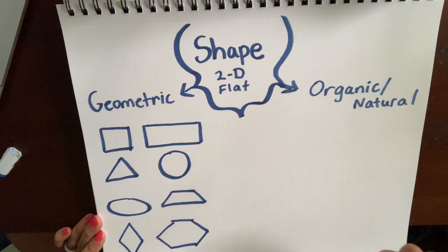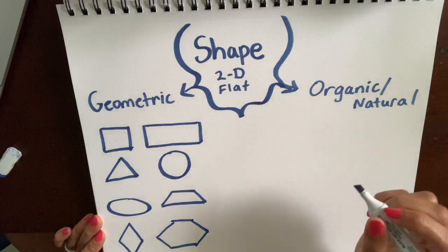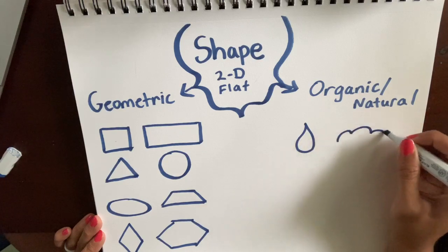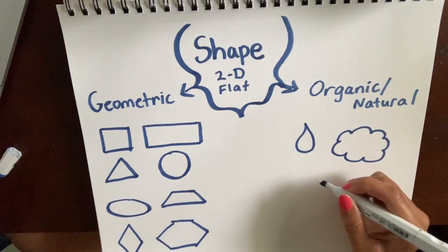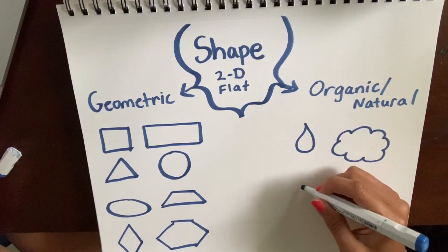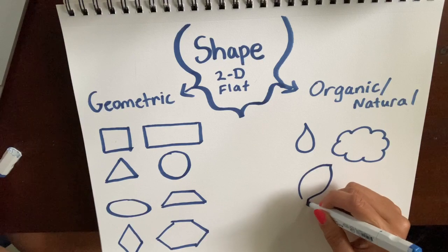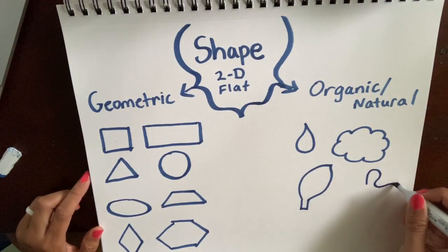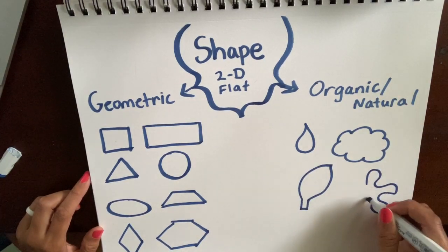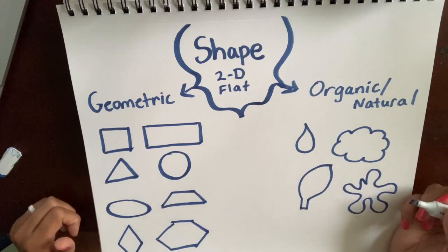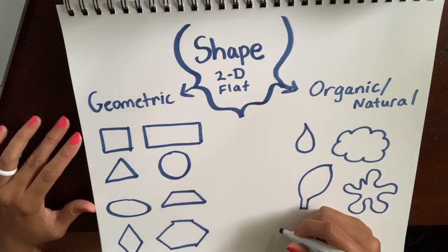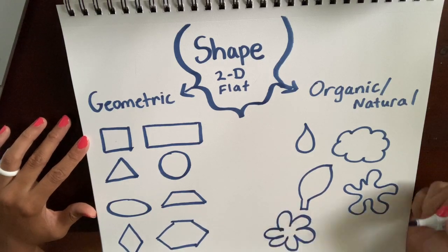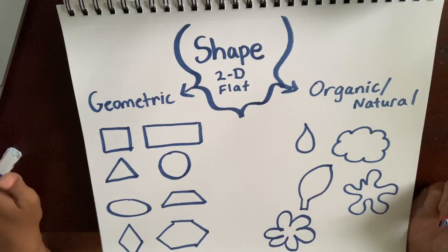Organic and natural shapes are usually things that we find in nature — like a water droplet or a cloud. Clouds can definitely be different shapes. There's a leaf, but there are many different kinds of leaves. There's a shape that looks like a splat — that could be almost anything. This one kind of looks like a flower, but it could be a lot of other things too.